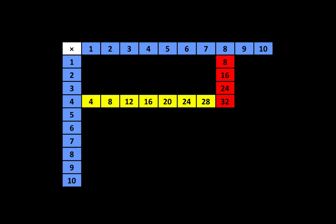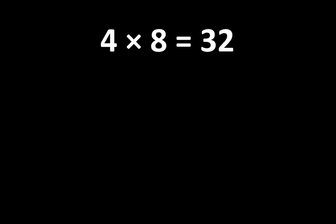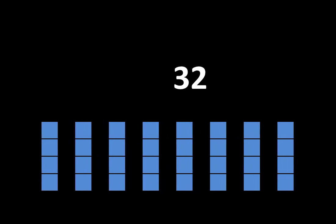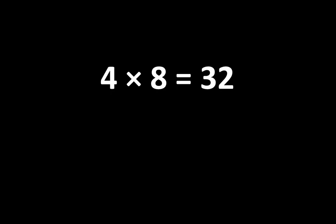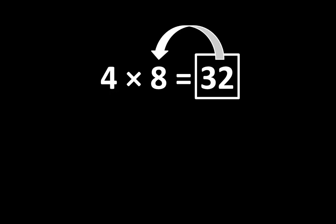Understanding that 32 is a multiple of both 4 and 8 is very important. 4 times 8 is equal to 32, and there are many important ideas related to the number 32. If we divided 32 into 8 equal parts, each part would be 1 eighth of 32, and 1 eighth of 32 is equal to 4. At the same time, if we divided 32 into 4 equal parts, each part would be 1 fourth of 32, and 1 fourth of 32 is equal to 8. You may notice that 32 is greater than 4, and 32 is also greater than 8. 32 is 8 times greater than 4, and 32 is also 4 times greater than 8.